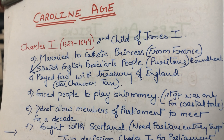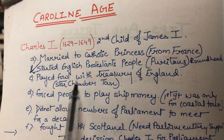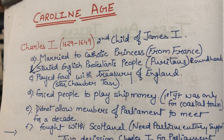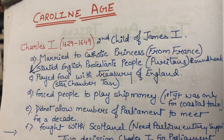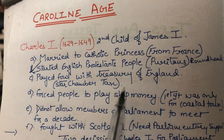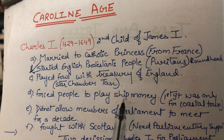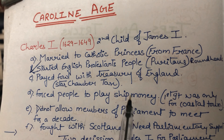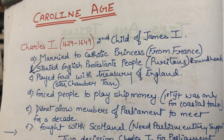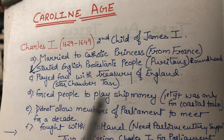Now there were many mistakes done by Charles I. First, he married a Catholic princess, which is why a group of people were against him. Second, he played foul with the Treasury of England and levied the Star Chamber tax, which meant rich people had to pay a great deal in fines. Third, he forced people to pay ship money, which was originally only for people who lived in coastal areas, but was now made compulsory for everyone. Next, he did not allow members of parliament to meet for a decade, because for him the king was the supreme power.